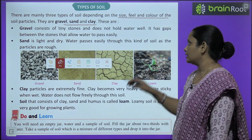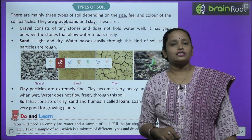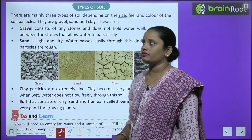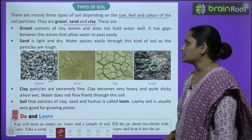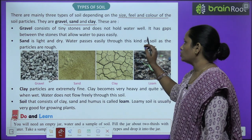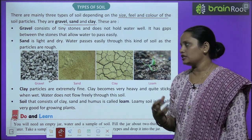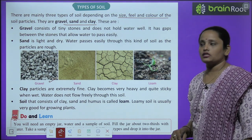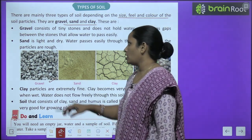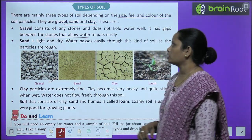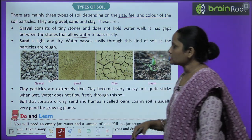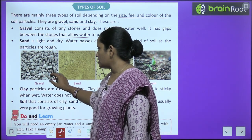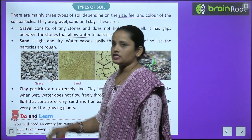The first type is gravel. Gravel consists of tiny stones and does not hold water well. It has gaps between the stones that allow water to pass easily through it.